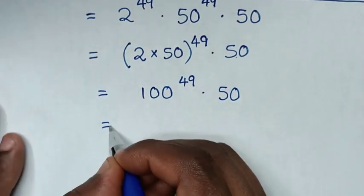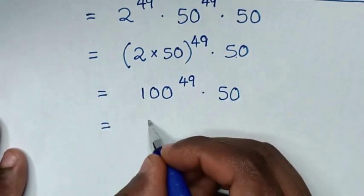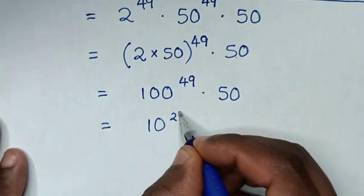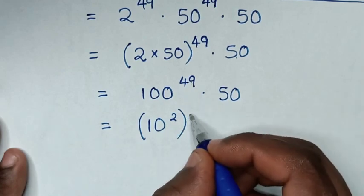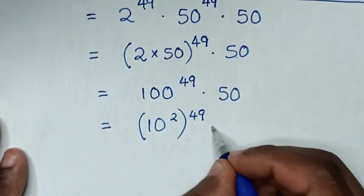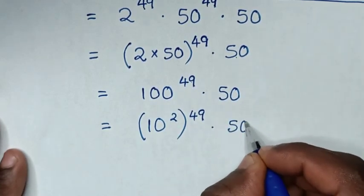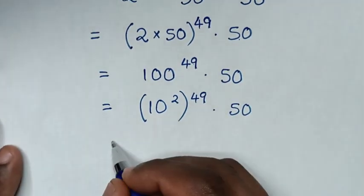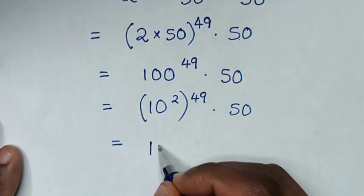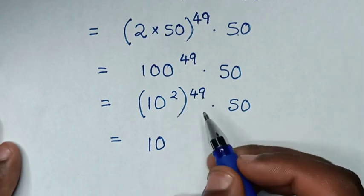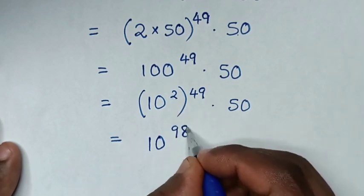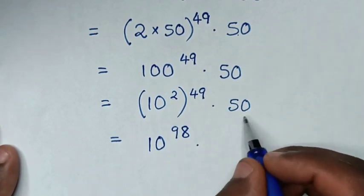Then it will be equal to, 100 is same as 10 square then bracket power of 49 then times 50. So it will be equal to, 10 power of 2 times 49 is power of 98 then times 50.